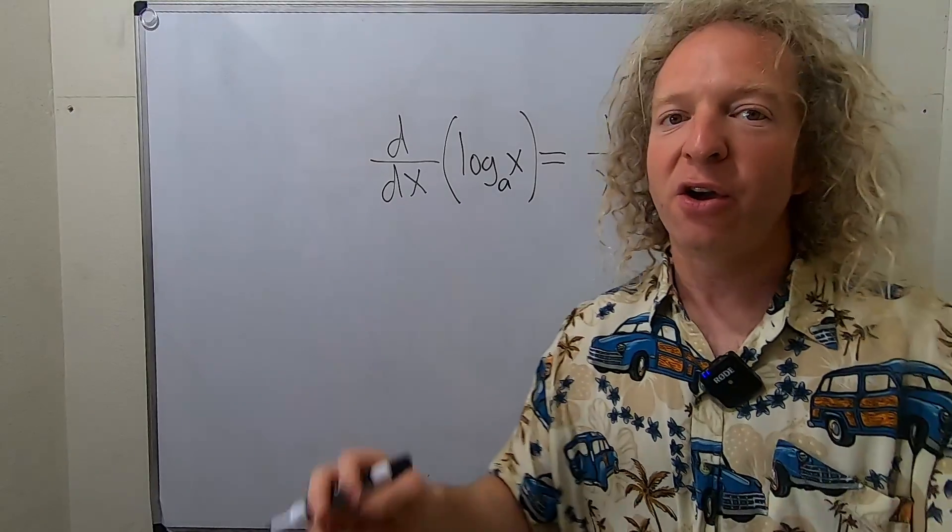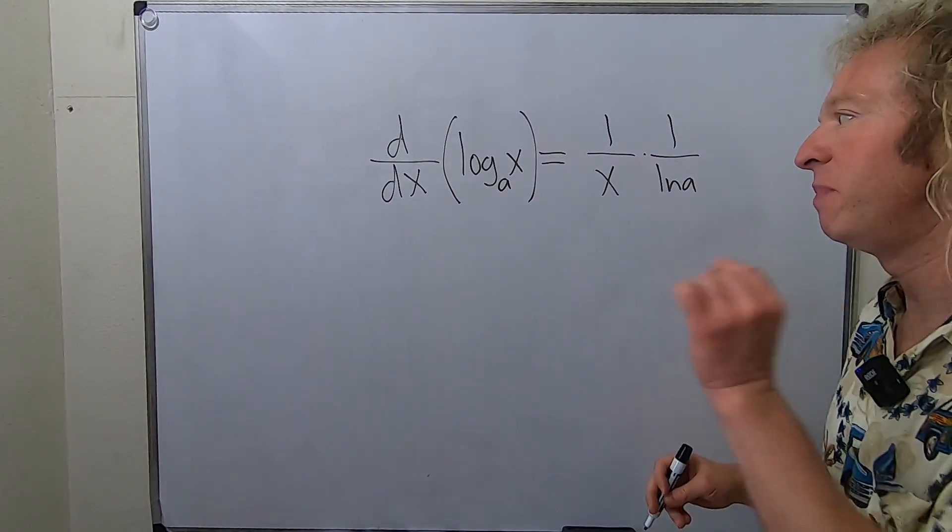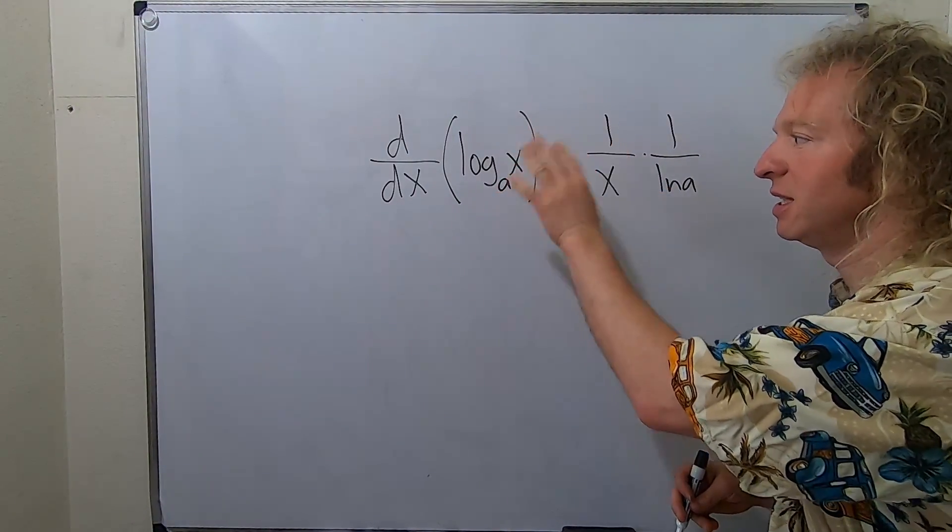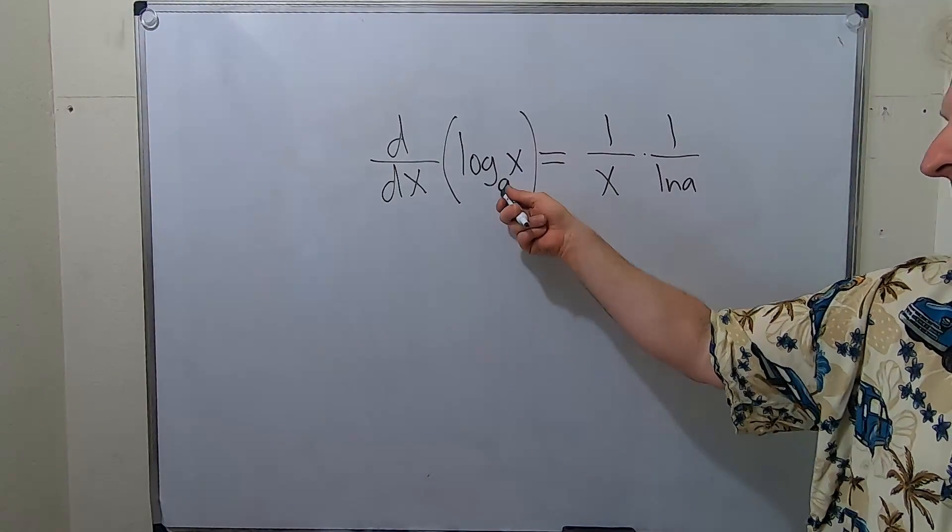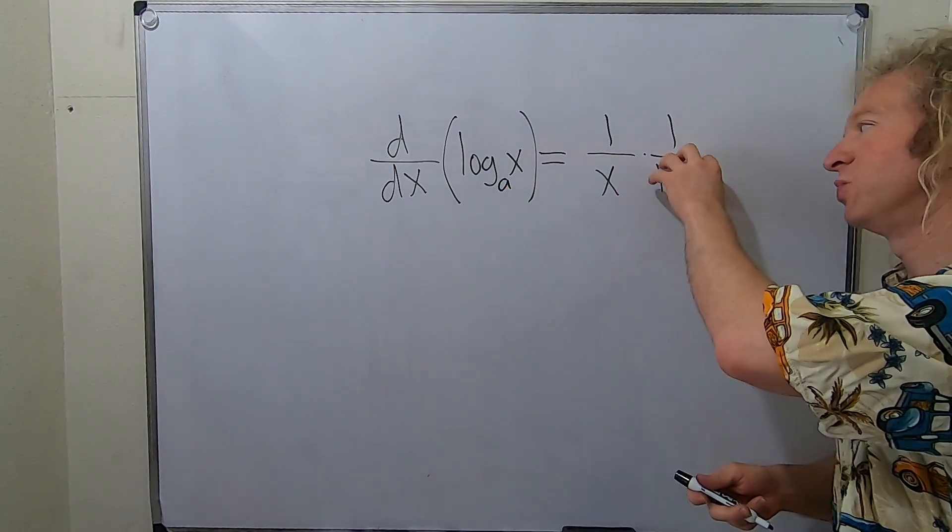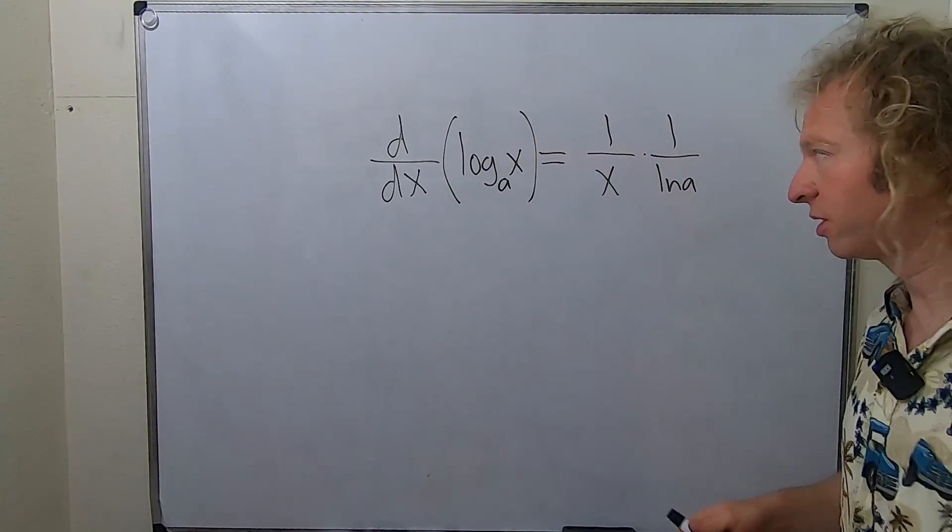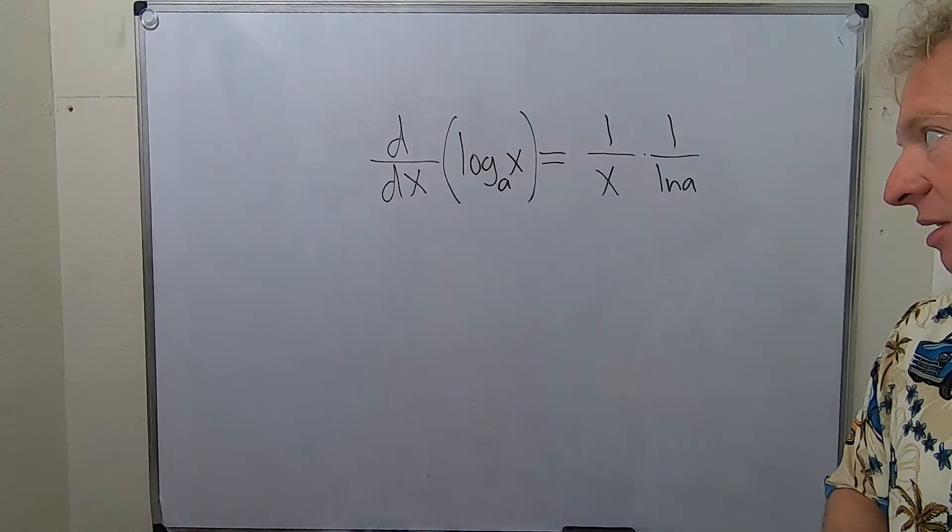This is the formula for the derivative of a log where the base is something different, not e or 10. If it's e, it still works. ln e is 1, so everything still works whenever a is equal to e.